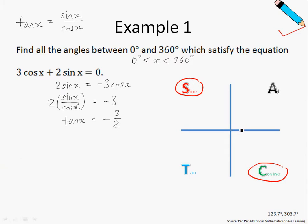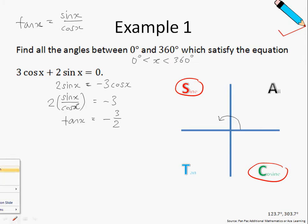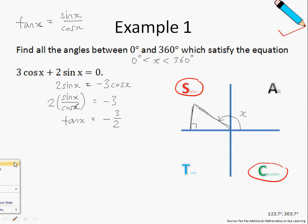Let us first explore the scenario where tan x is in the sine quadrant. So x goes up to the sine quadrant. Drawing our right-angled triangle, we will identify our angle alpha. Angle alpha is our basic angle, and it's always measured with respect to the horizontal axis.